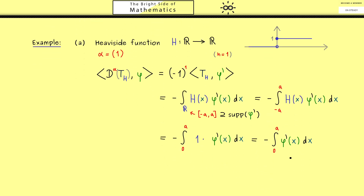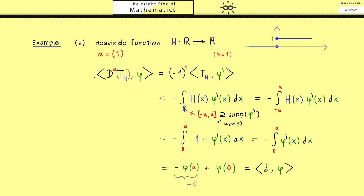We have a C^infinity function and can apply the fundamental theorem of calculus. Using an antiderivative of phi', the integral gives -phi(a) - (-phi(0)). Since a lies outside the support of phi, phi(a) equals zero, and only phi(0) remains. This can be rewritten as the delta distribution applied to phi: delta(phi). Since this holds for all test functions phi, we conclude that the distributional derivative of the Heaviside function equals the delta distribution.